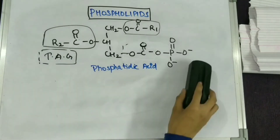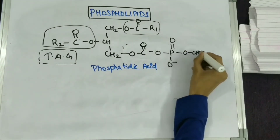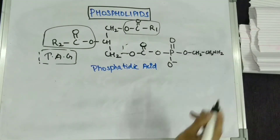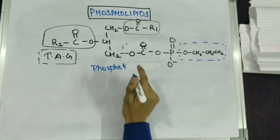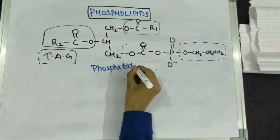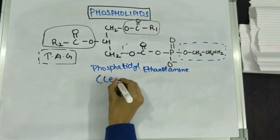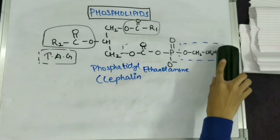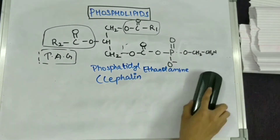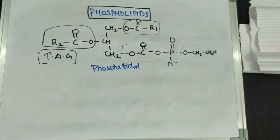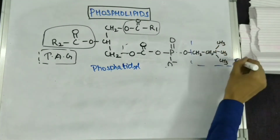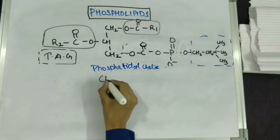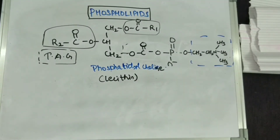When you attach one oxygen of the phosphate group to ethanolamine, the structure you get is phosphatidylethanolamine, which is also known as cephalin. When you replace the two hydrogens of the amine molecule with three methyl groups, the structure is known as choline, and the resulting compound's common name is lecithin.